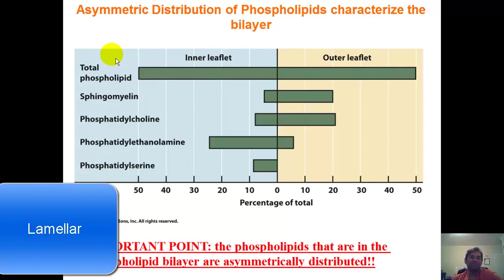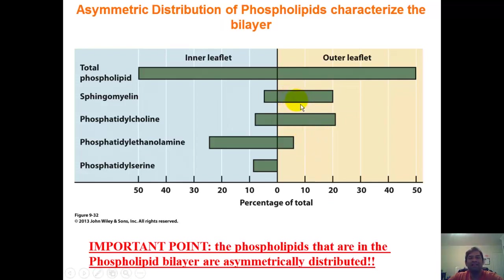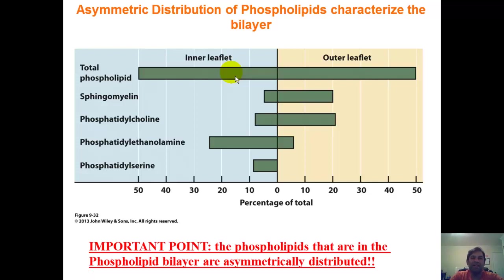Wrapping up, asymmetric distribution of phospholipids is a key characteristic of the bilayer. For example, taking isolated cell membranes from a rat, you can see the outer leaflets have a little more sphingomyelin while the inner leaflets have less. The inner leaflet facing the cytosol has phosphatidylethanolamine and a little phosphatidylserine. This represents asymmetric distribution — the total phospholipid amount stays roughly even between inner and outer, but the types of phospholipids vary.